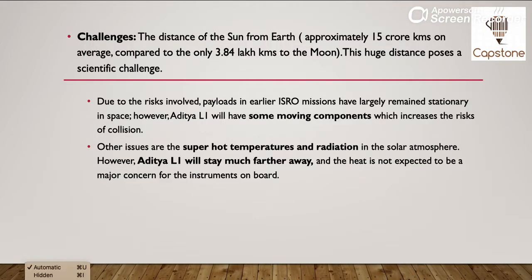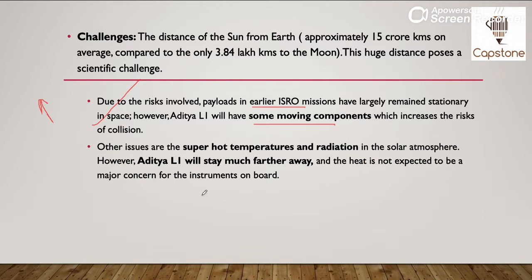Ab agar challenges ki baat karein, jo major challenge hoga: jo Earth se sun ka distance hai, woh bahut zyada hai, aur yahi jo distance hai, ek scientific challenge pose karta hai is pure mission ke liye. Aur doosri agar hum risks ki baat karein, jo payloads earlier ISRO ke missions the, woh largely stationary rehte the. However, jo Aditya L1 hai, iske andar kuch moving components honge, jiske kaaran collision hone ka jo risk hai, woh increase ho jayega. Aur waise bhi humein pata hai sun ka jo temperature hai, solar atmosphere ka temperature bahut zyada hai. Jabki Aditya L1 jo hoga, woh sun ke paas nahi jayega — ye baat humein dhyan rakhni hai.